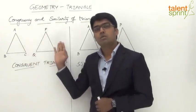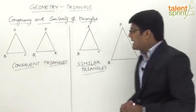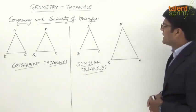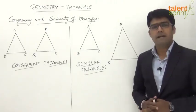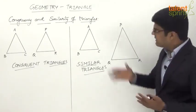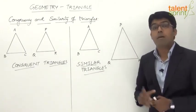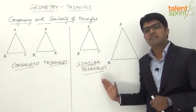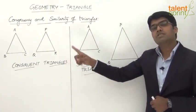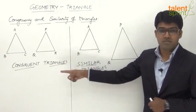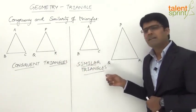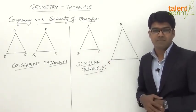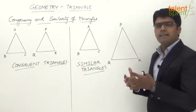Now let's look at similar triangles — two triangles ABC and PQR. Through a glance we see that the triangles are similar in shape, but not in size. The basic difference between congruent triangles and similar triangles is that congruent triangles are similar in shape and in size, whereas similar triangles have only the same shape but not the same size.